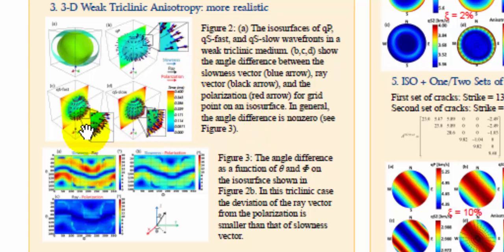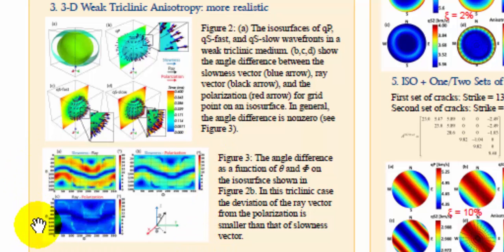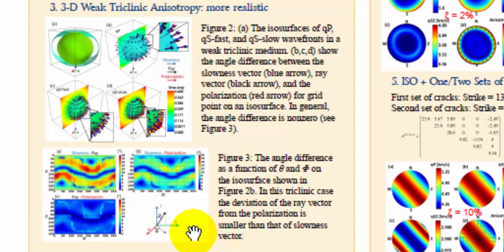You probably cannot see it clearly by looking at the arrows, but they are not identical. For P wave, I show the angle differences for the three vectors as a function of theta, the polar angle, and phi, the azimuth. In general, the angle between the slowness vector and ray vector is the maximum, and the angle between the polarization and ray direction is minimum. This is consistent with other people's findings that we can use the polarization to approximate the ray direction in anisotropic cases.